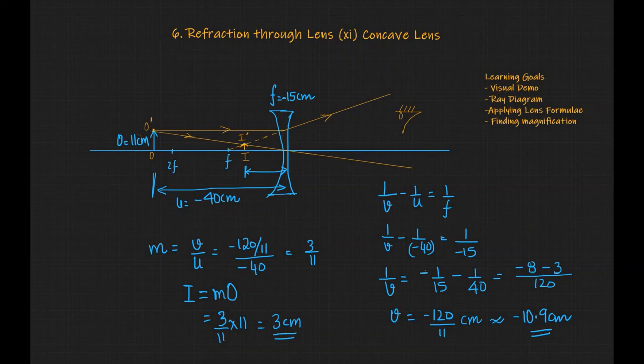So for an object height of 11 cm, the image height will be 3 cm. You can see that this image is erect and it is virtual. So virtual and erect go together. So the characteristic is virtual, erect and it is diminished.